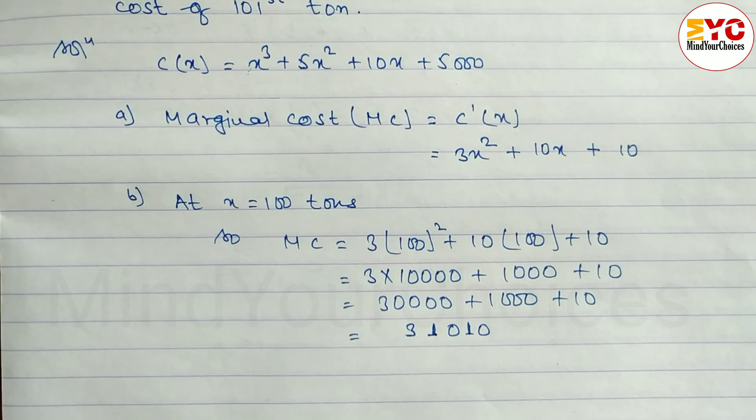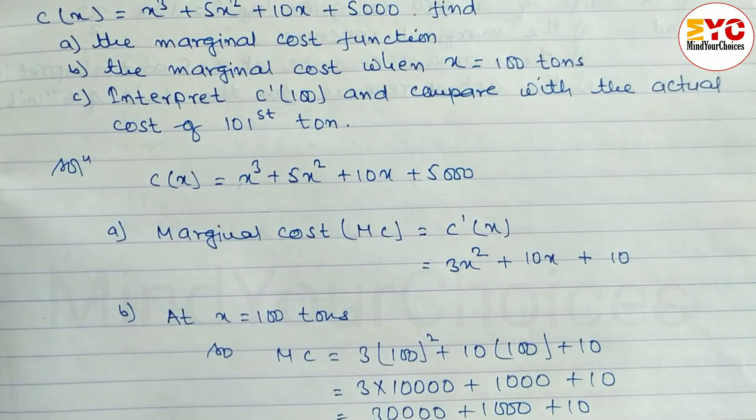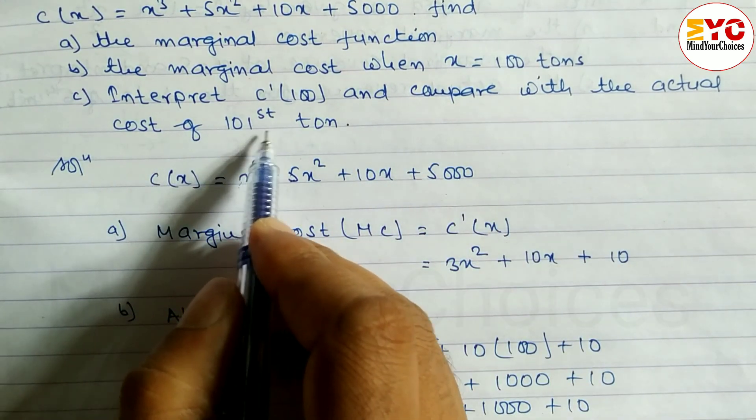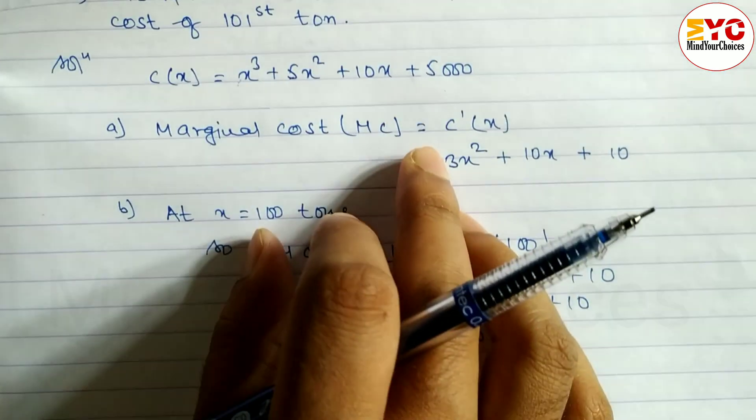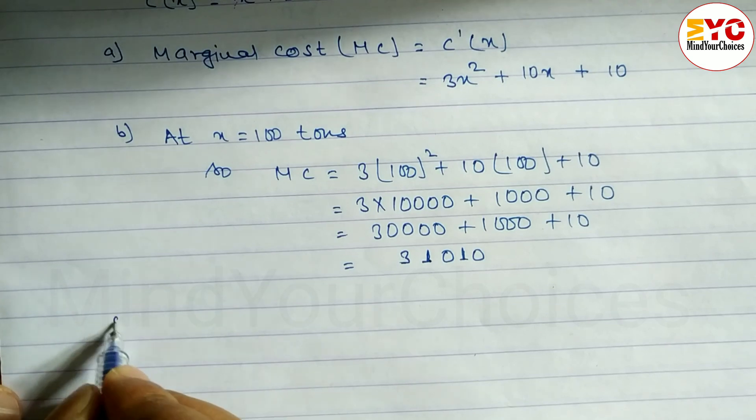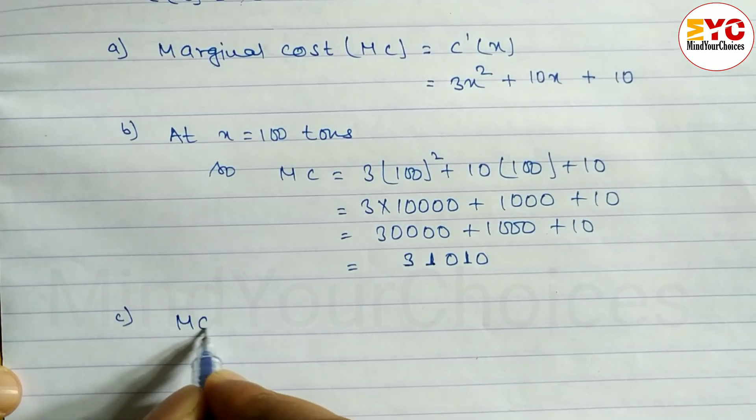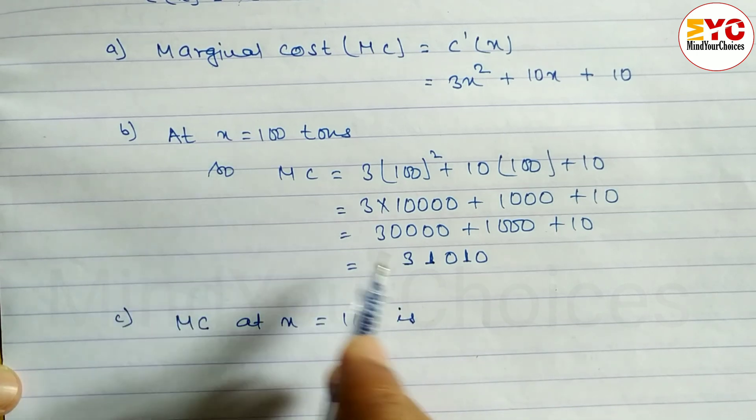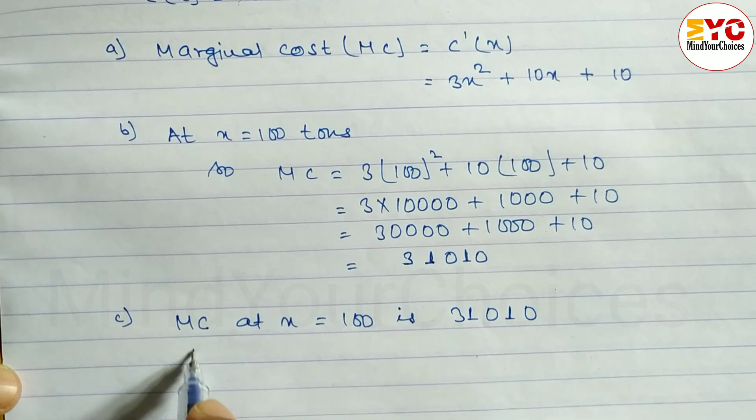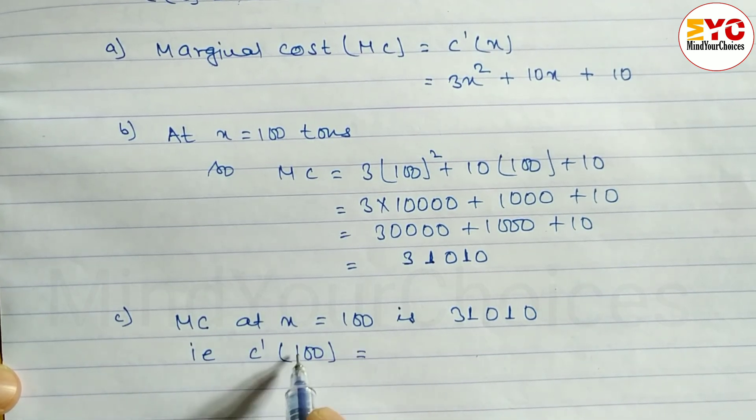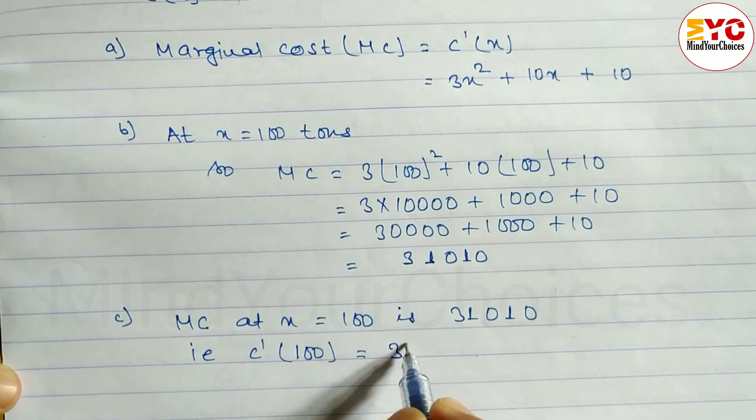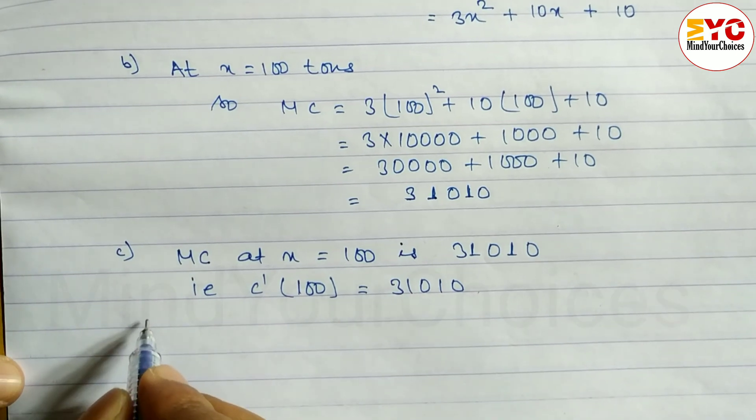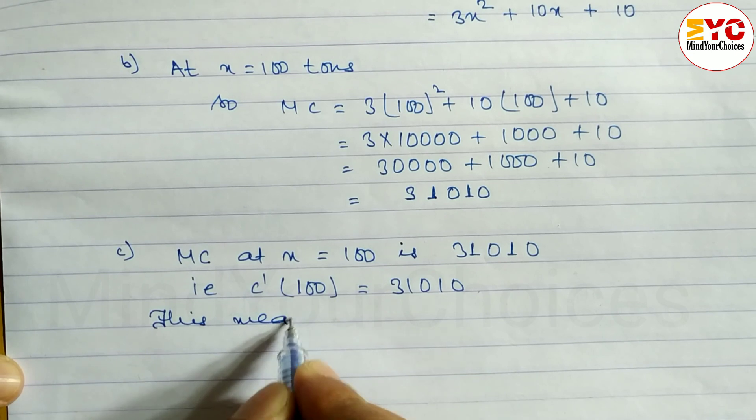Now for part c, interpret C'(100). C'(100) is 31,010. Compare with the actual cost of 101 tons. The marginal cost at x equals 100 is 31,010. That is, C'(100) equals 31,010. The marginal cost at 100 tons equals 31,010.